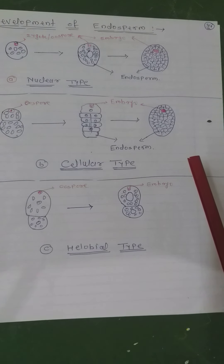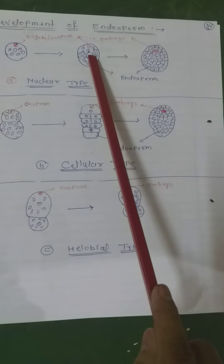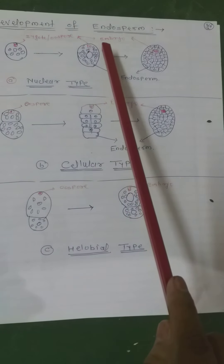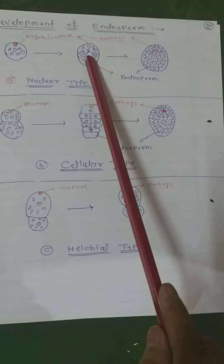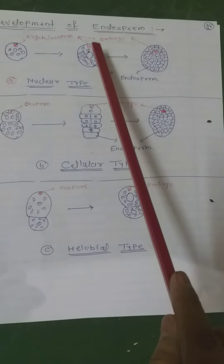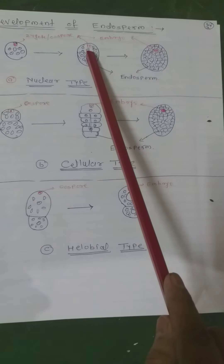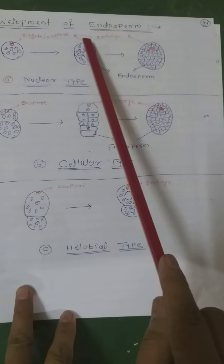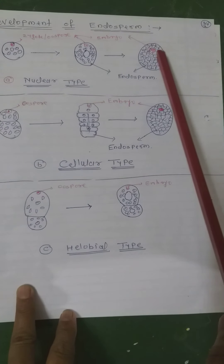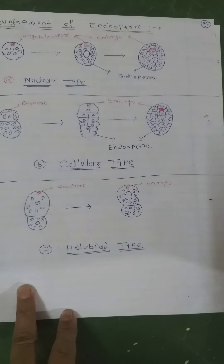In nuclear type development, the primary endosperm nucleus divides repeatedly and mitotically without wall formation, producing a large number of free nuclei. A large central vacuole appears in the center of the cell, pushing the nuclei towards the periphery. Later, walls develop between the nuclei.